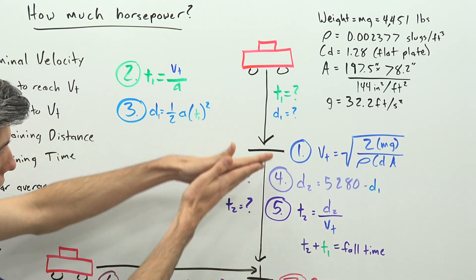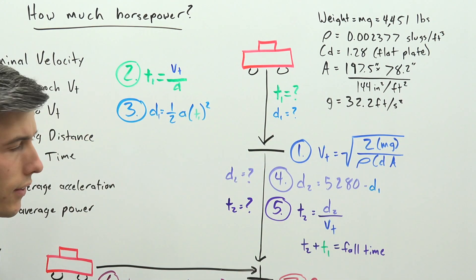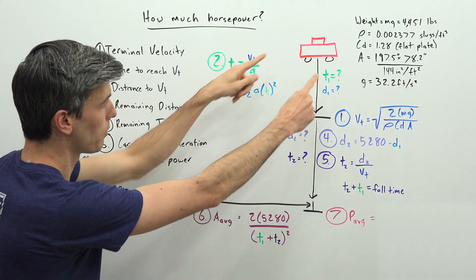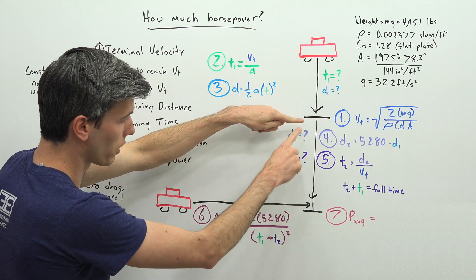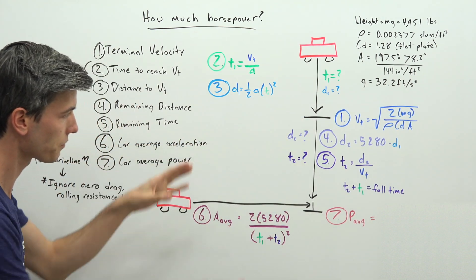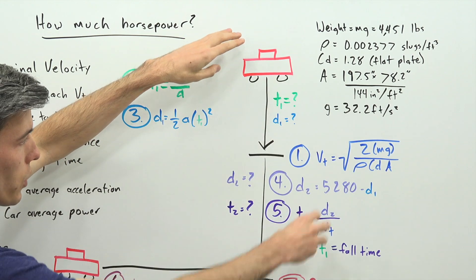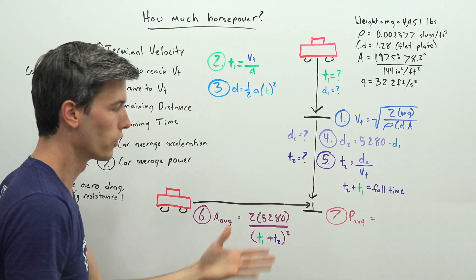Now we know it's going to fall that remaining distance at its terminal velocity. So we can do some quick math here and take the remaining distance, divide it by its terminal velocity and that will give us the time it takes to fall that remaining distance. So we've calculated how much time it took to reach terminal velocity. We've calculated how much time it will spend traveling once it reaches terminal velocity.